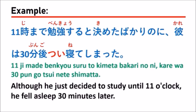So in Japanese, you can say つい寝てしまった。 That means it's not intentional — it's a mistake by accident.